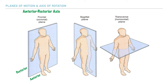In the frontal plane, which divides the body into anterior and posterior portions, all of the osteokinematic movements identified within this plane are possible because of some type of rotation around the plane's axis. This axis runs perpendicular to the plane itself, and for the frontal plane we have what's called the anterior-posterior axis.